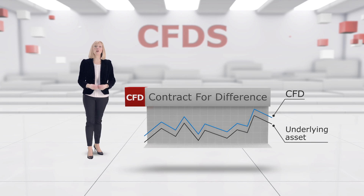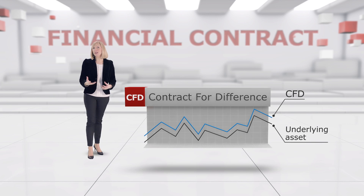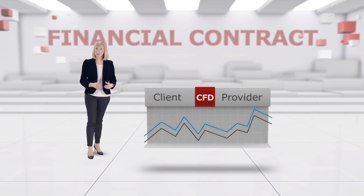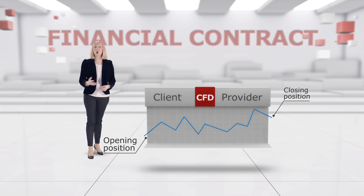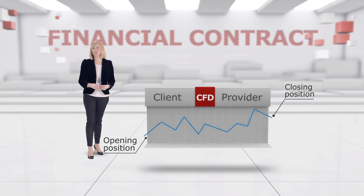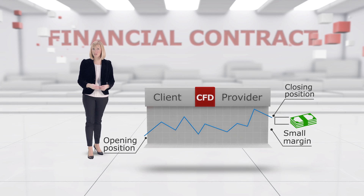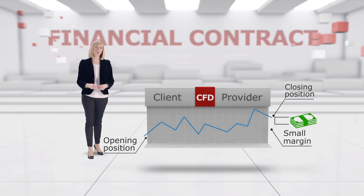Technically, a Contract for Difference is a financial contract between a client and a CFD provider. The difference is the difference between the opening and closing price for the position, and that difference is paid out in cash once the position has closed.